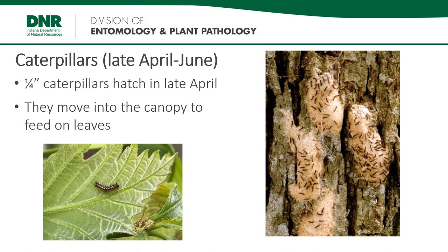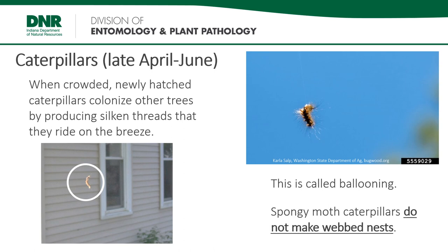Emergence will vary depending on how warm or cold the spring is, but sometime around April 25th, quarter-inch-long caterpillars will hatch out of the eggs. These caterpillars will soon move into the tree canopy to feed. When the caterpillars are in crowded conditions, they will go through a process called ballooning. Caterpillars spin a silken thread that they will then ride in the wind in order to spread to less crowded areas and colonize new trees. In these pictures, the Spongy Moth caterpillar is hanging from a single thread hoping to catch a ride to a new area.